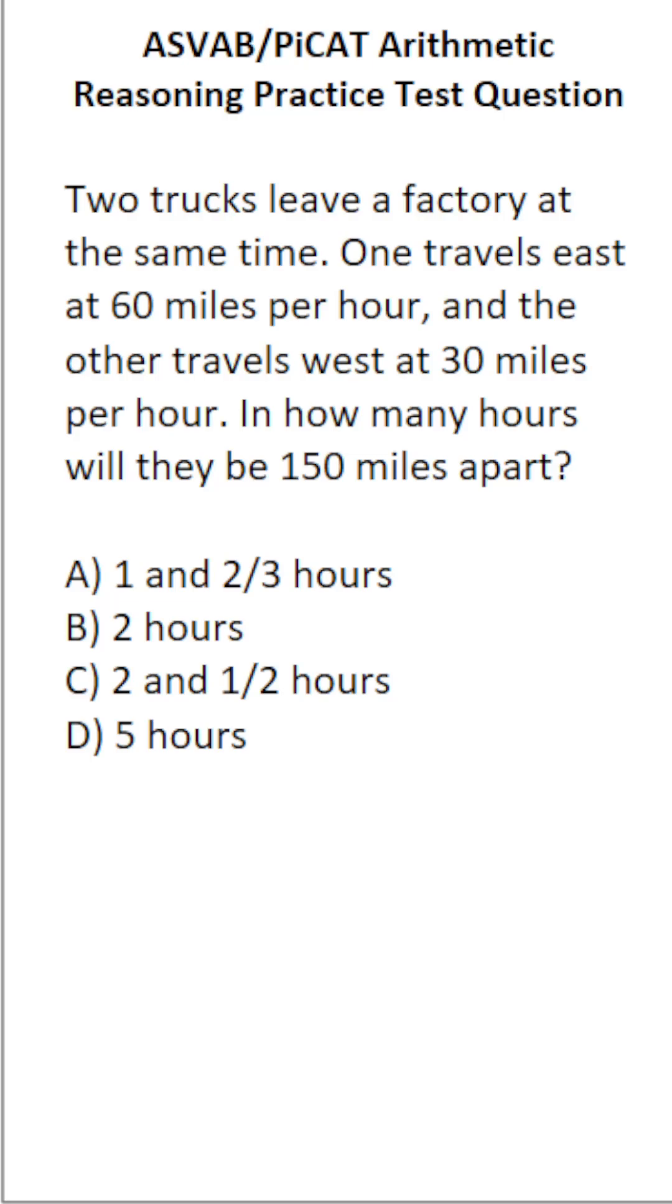This arithmetic reasoning practice test question for the ASVAB and PiCAT says two trucks leave a factory at the same time. One travels east at 60 miles per hour and the other travels west at 30 miles per hour. In how many hours will they be 150 miles apart?